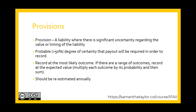Provisions. This is a liability where there requires a large amount of professional judgment with respect to its value and timing. We say that when it's probable — 50% or greater — that the degree of certainty of payout is required in order to record this. We record this at the most likely outcome. Under IFRS, if there are a range of outcomes, we record at the expected value, which is recording each outcome by its probability and then summing that amount. This should be re-estimated annually.